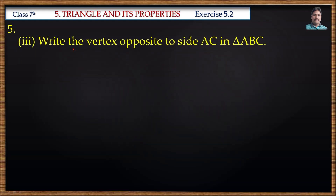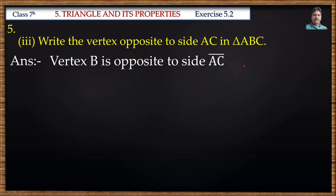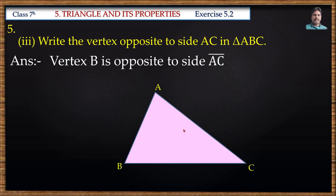Write the vertex opposite to side AC in triangle ABC. In triangle ABC, the side AC is opposite to vertex B. See this picture — this is side AC and its opposite vertex is B.